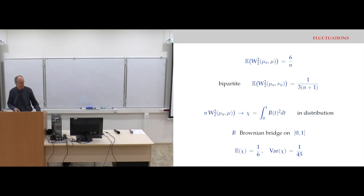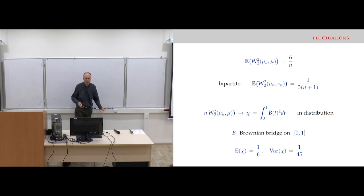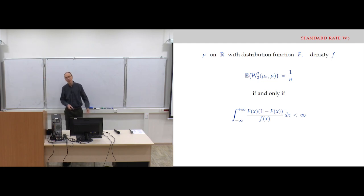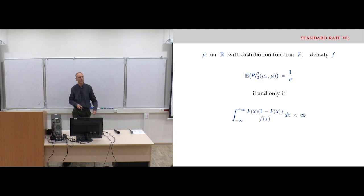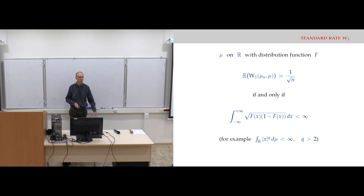The picture is rather complete for W_2 for the uniform. The question is whether this rate holds for other distributions. The standard rate in W_2 is 1/n, as for the uniform, if and only if you have a condition on both the distribution function f and its density. For W_1 we only needed a condition on the distribution function; here we need something involving both the distribution function and the density.